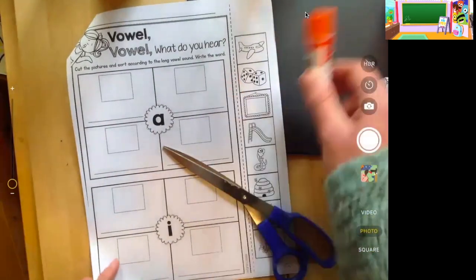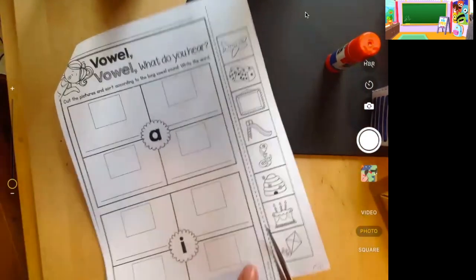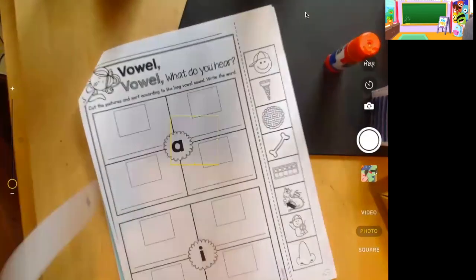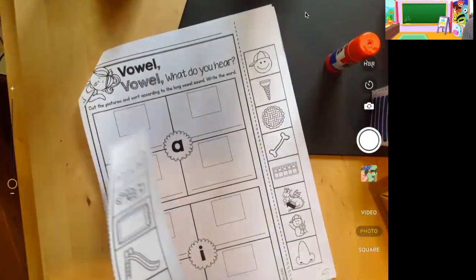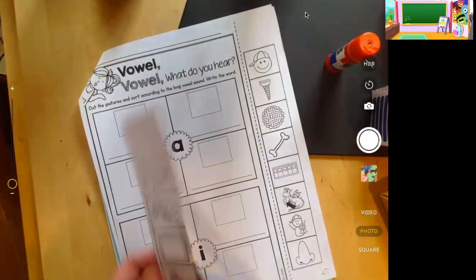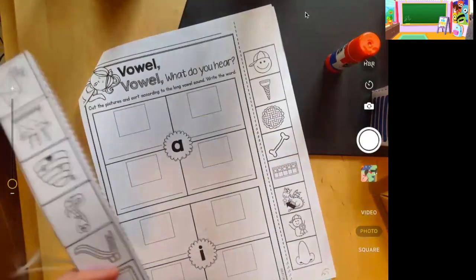And I'm going to cut my little pictures off very carefully. Remember, a good cutting skill is to turn the paper and not the scissors. Scissors always face the same way, but I just turn the paper. It's a lot easier.